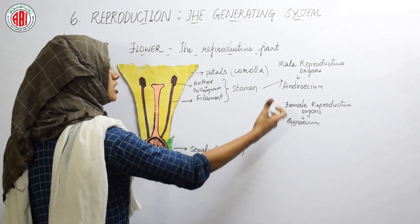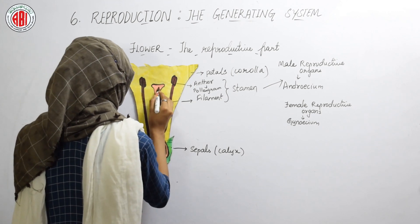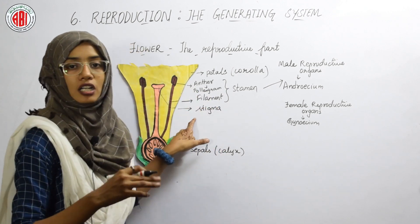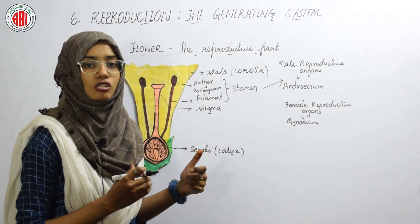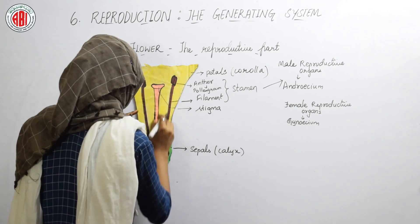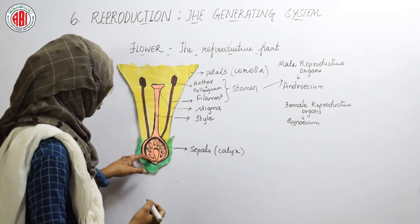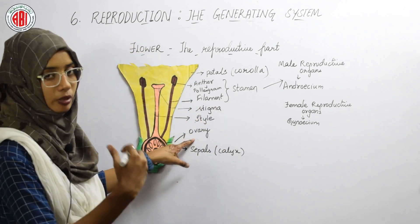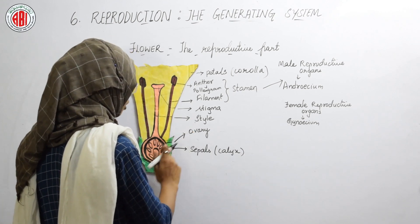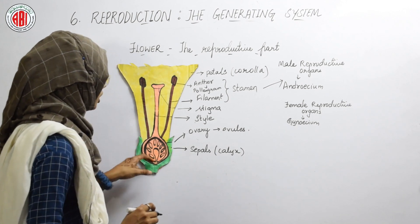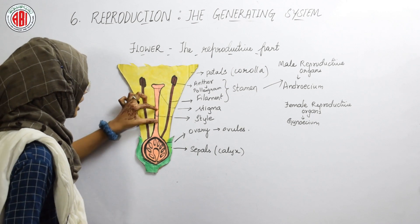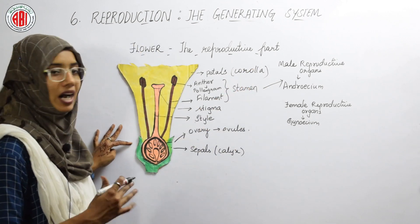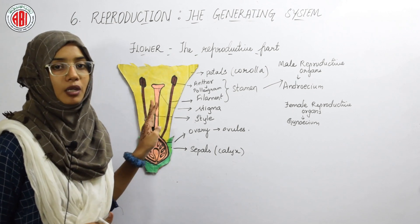Now we will talk about the gynaecium — the female reproductive organs. The upper portion is called the stigma, which is sticky because it has sugary substances that attract insects to shed pollen grains on it. The tube-like structure below is called the style, and at the bottom is a round structure called the ovary. The ovary is the main female reproductive part and contains ovules. Stigma, style, and ovary together constitute the gynaecium.